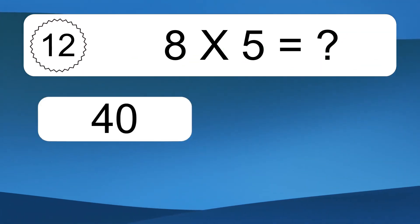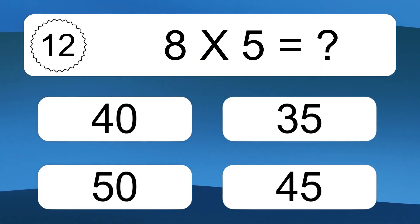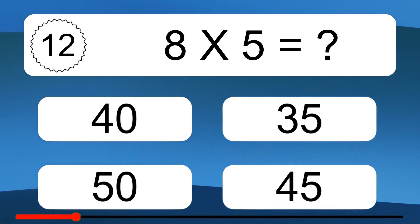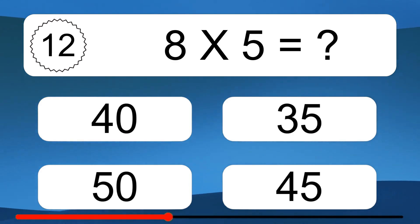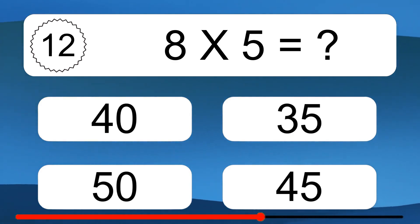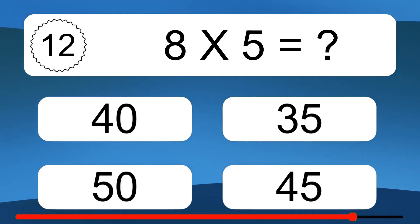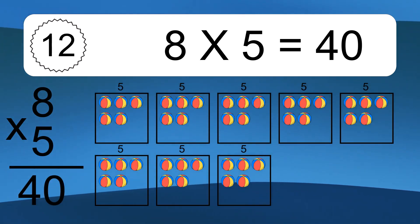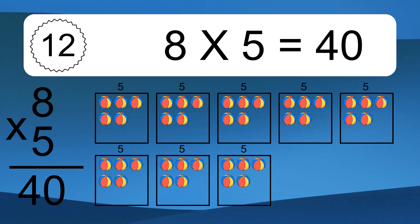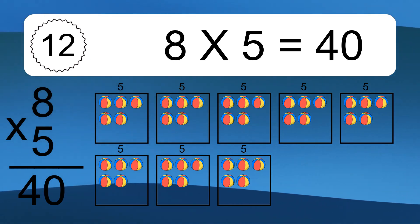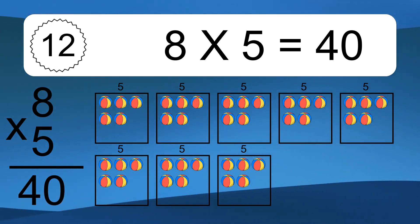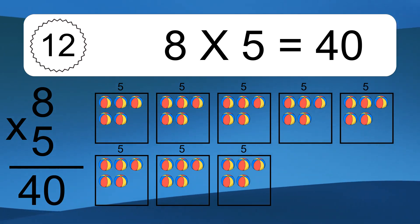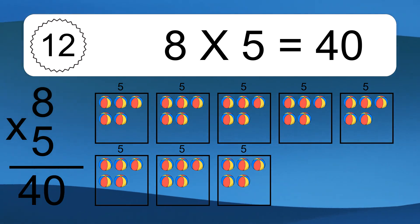8 times 5 equals what? 8 times 5 equals 40. We have 8 boxes, and each box has 5 colorful balls inside. If you count all the balls in all the boxes together, you will have 8 times 5 balls. This equals 40 balls.